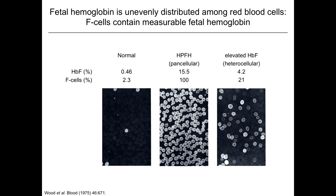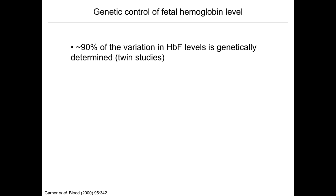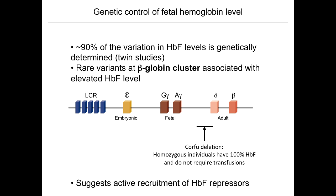From twin studies we know that the regulation of fetal hemoglobin is largely genetic. From rare individuals with elevated fetal hemoglobin, some regulation is due to variation at the beta globin cluster itself. There have been informative mutants, including individuals carrying the CORFU deletion, who have 100% fetal hemoglobin. These studies suggest that sequences at this cluster recruit complexes that repress fetal hemoglobin, but the nature of these repressive factors has remained essentially a black box for the last 50 years.